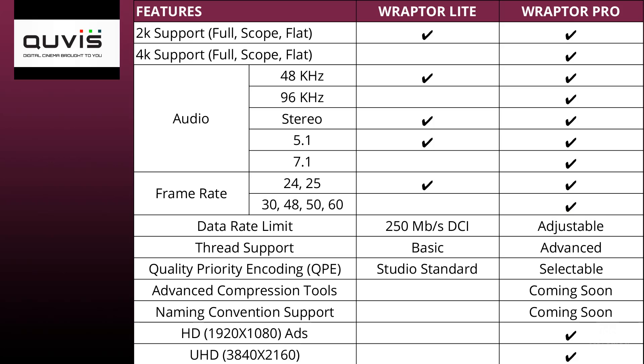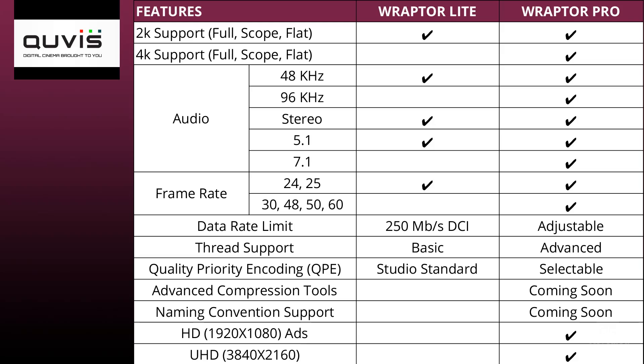Some films are actually working on higher frame rates. The data limit for Lite is 250 megabits per second, and it's completely adjustable in the Pro version. Threading support is basic in Lite and advanced in Pro — threading determines how well the software uses your system's computing power, and these files do take significant computing power. Quality priority and coding is studio standard in Lite or selectable in Pro. Advanced compression and naming tools are coming soon. HD and UHD support is only in the Pro version. The Lite version gives you free 2K support so you can create a true, real theatrical DCP.